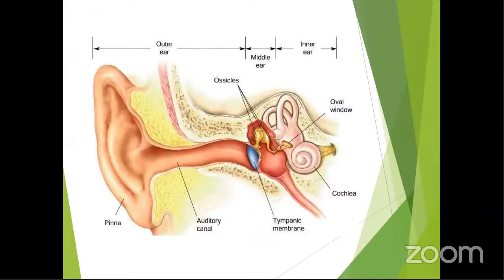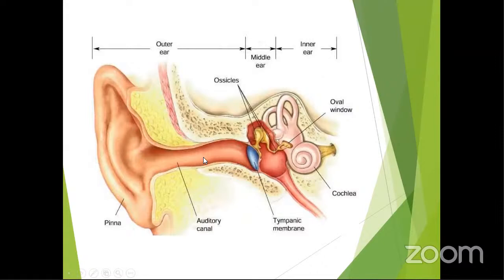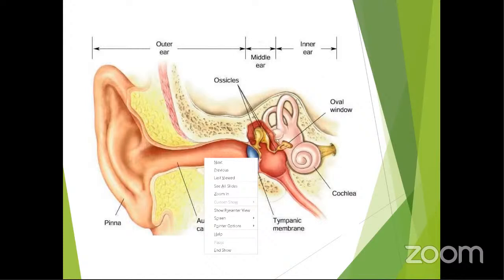This is a diagrammatic picture showing the ear from the external ear to the inner ear, and that is how we divide the ear — external ear, middle ear, and inner ear. The external ear consists of the pinna and external auditory canal. The middle ear, medial to the tympanic membrane, consists of the ossicles. The middle ear cleft includes the middle ear cavity, the Eustachian tube, and the mastoid air cell system. Medial to that is the inner ear.